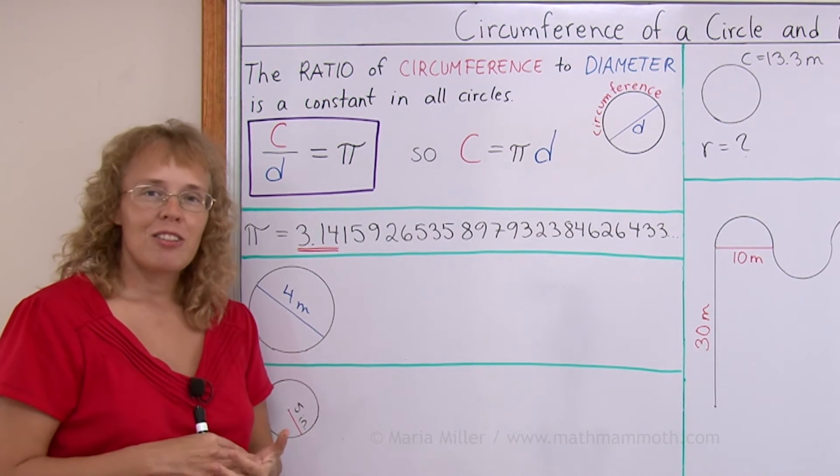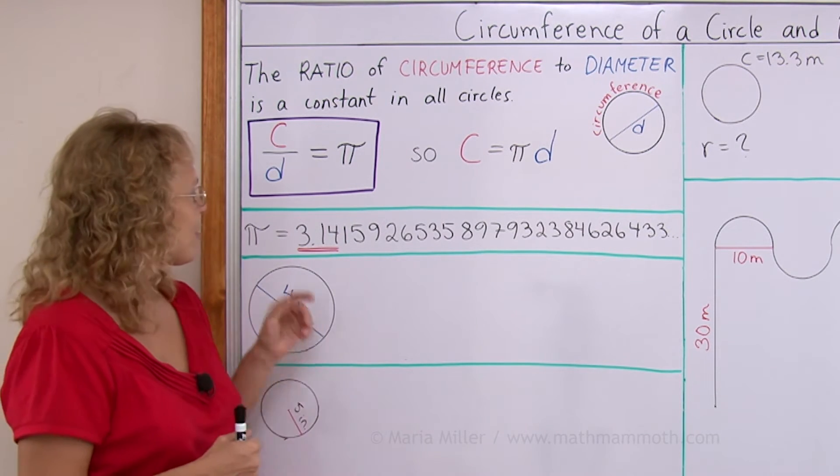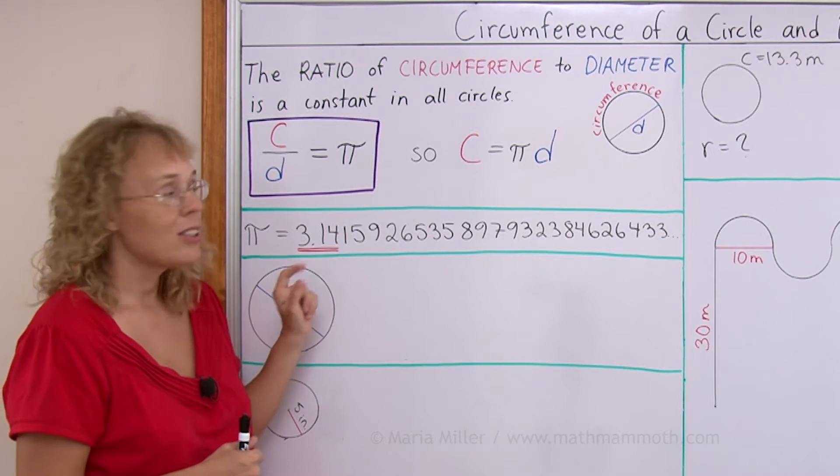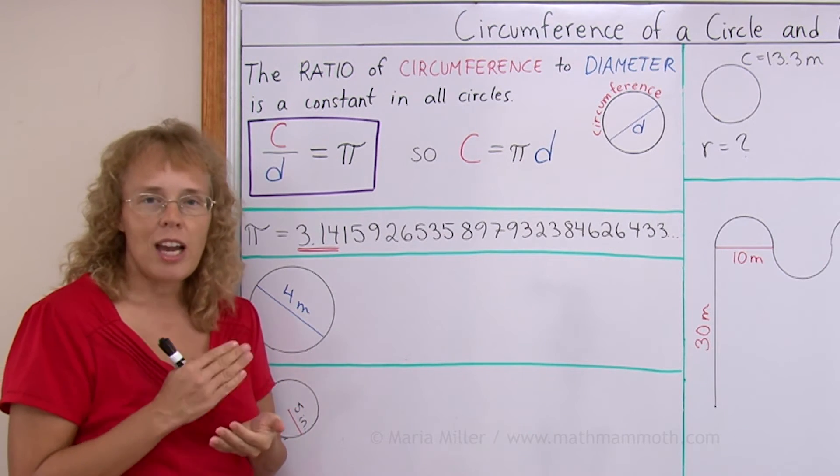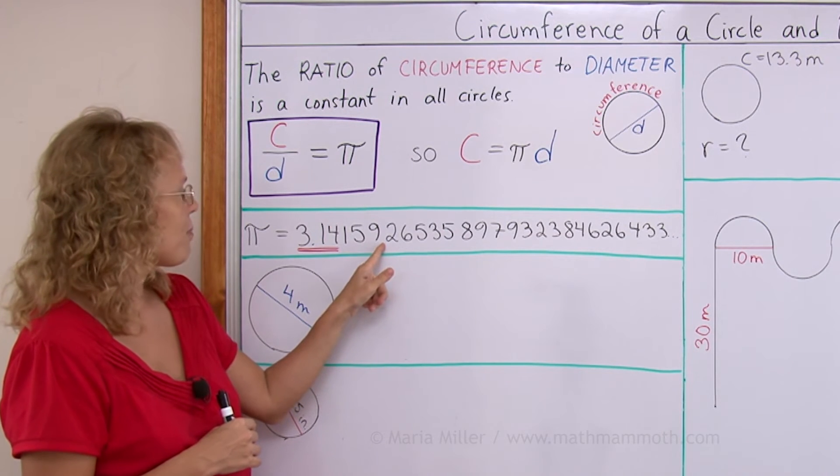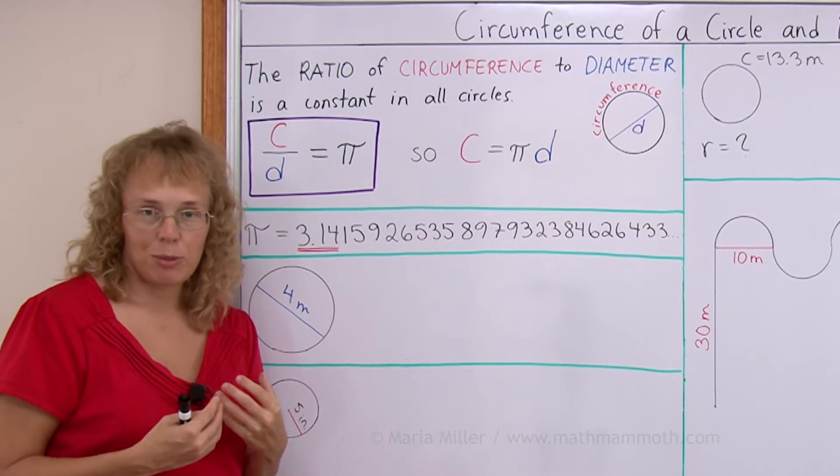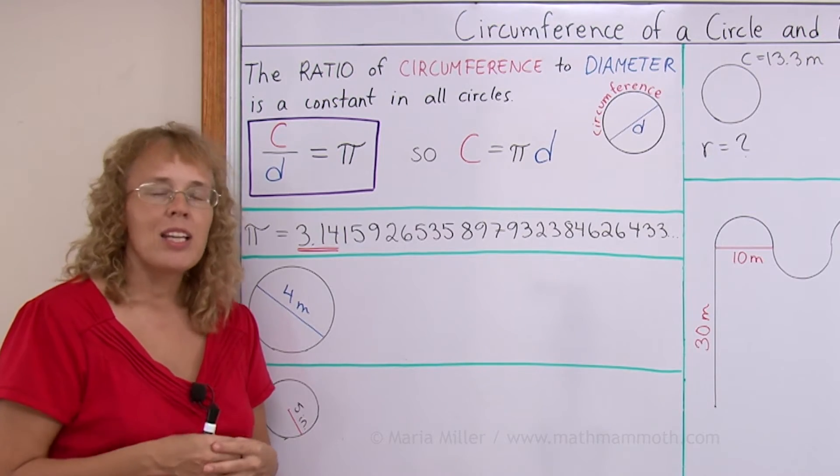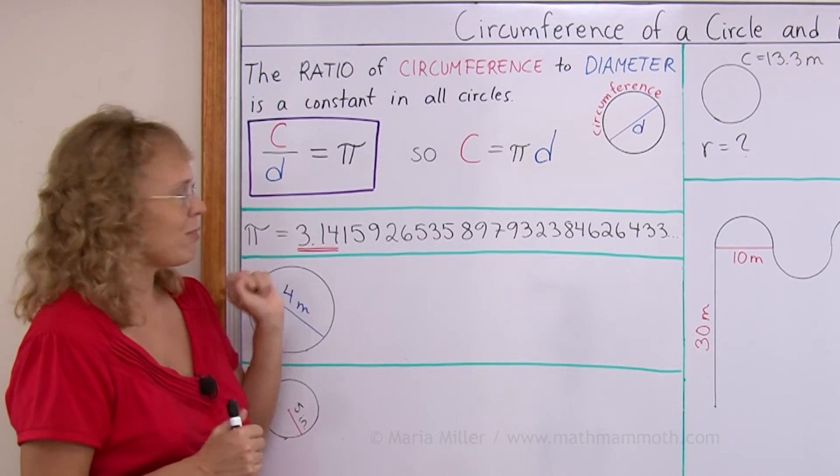Normally, when you are calculating, it is enough to use 3.14, or if you need a very good accuracy, then use maybe five digits, up to nine. Your calculator may have a button for pi. So use that if it is there. If it isn't, then use 3.14.